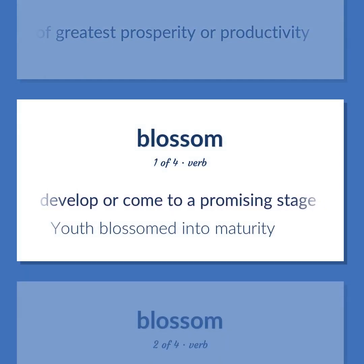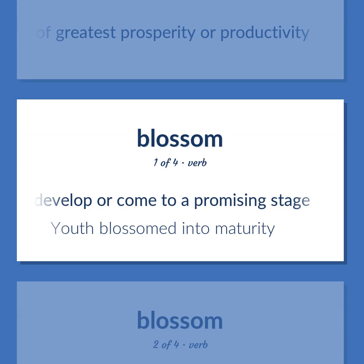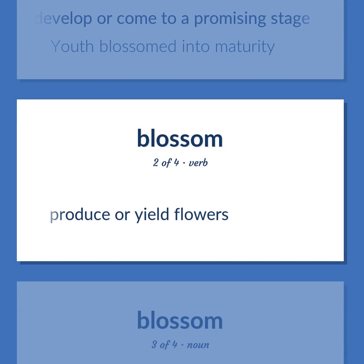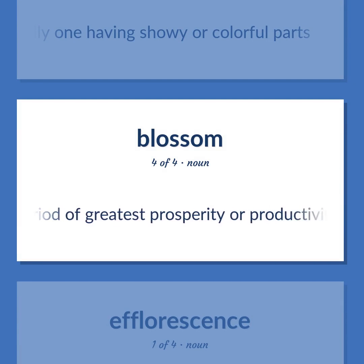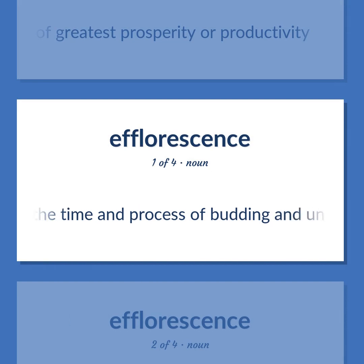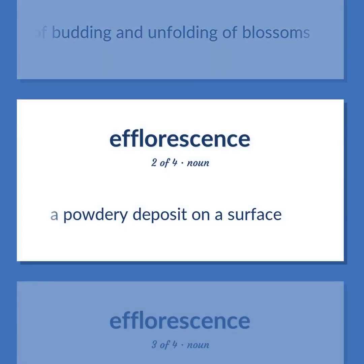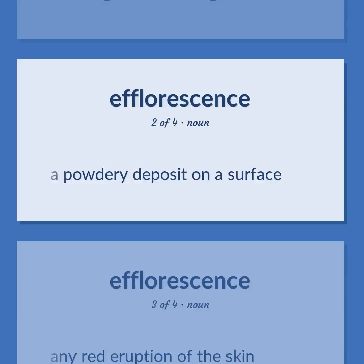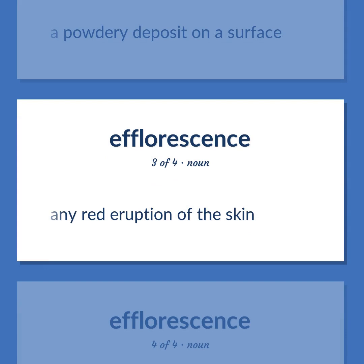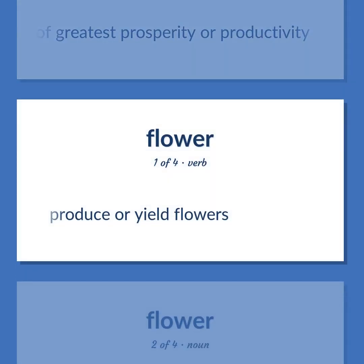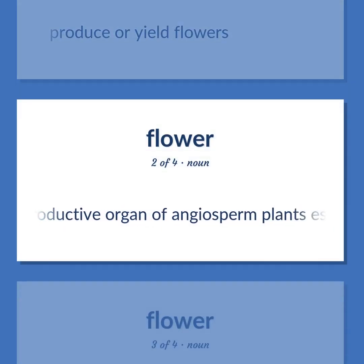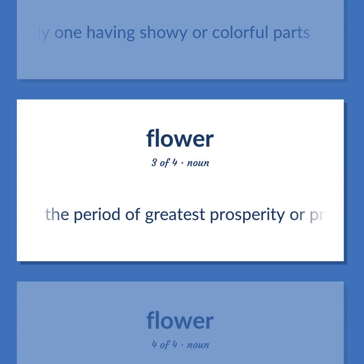Blossom/Flower: Develop or come to a promising stage — youth blossomed into maturity. Produce or yield flowers. Reproductive organ of angiosperm plants, especially one having showy or colorful parts. The period of greatest prosperity or productivity. The time and process of budding and unfolding of blossoms. A powdery deposit on a surface. Any red eruption of the skin. The period of greatest prosperity or productivity. Produce or yield flowers. Reproductive organ of angiosperm plants, especially one having showy or colorful parts. A plant cultivated for its blooms or blossoms.